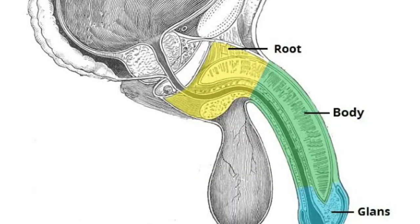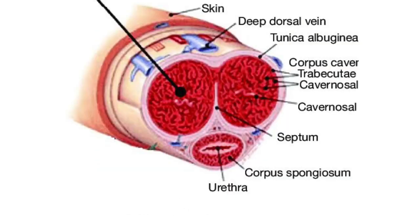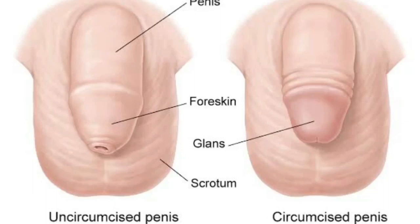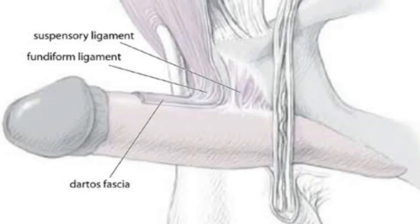The body of the p structure is the free pendulous part suspended from the pubic symphysis. The skin of the p structure is thin and darkly pigmented. It is connected to the tunica albuginea by a loose connective tissue. At the neck of the p structure, the skin is prolonged by a double layer of skin known as the prepuce, or foreskin, which in an uncircumcised man covers the glans to a very large extent. The frenulum of the prepuce is a median fold that passes from the deep layer of the prepuce to the urethral surface of the glans penis.